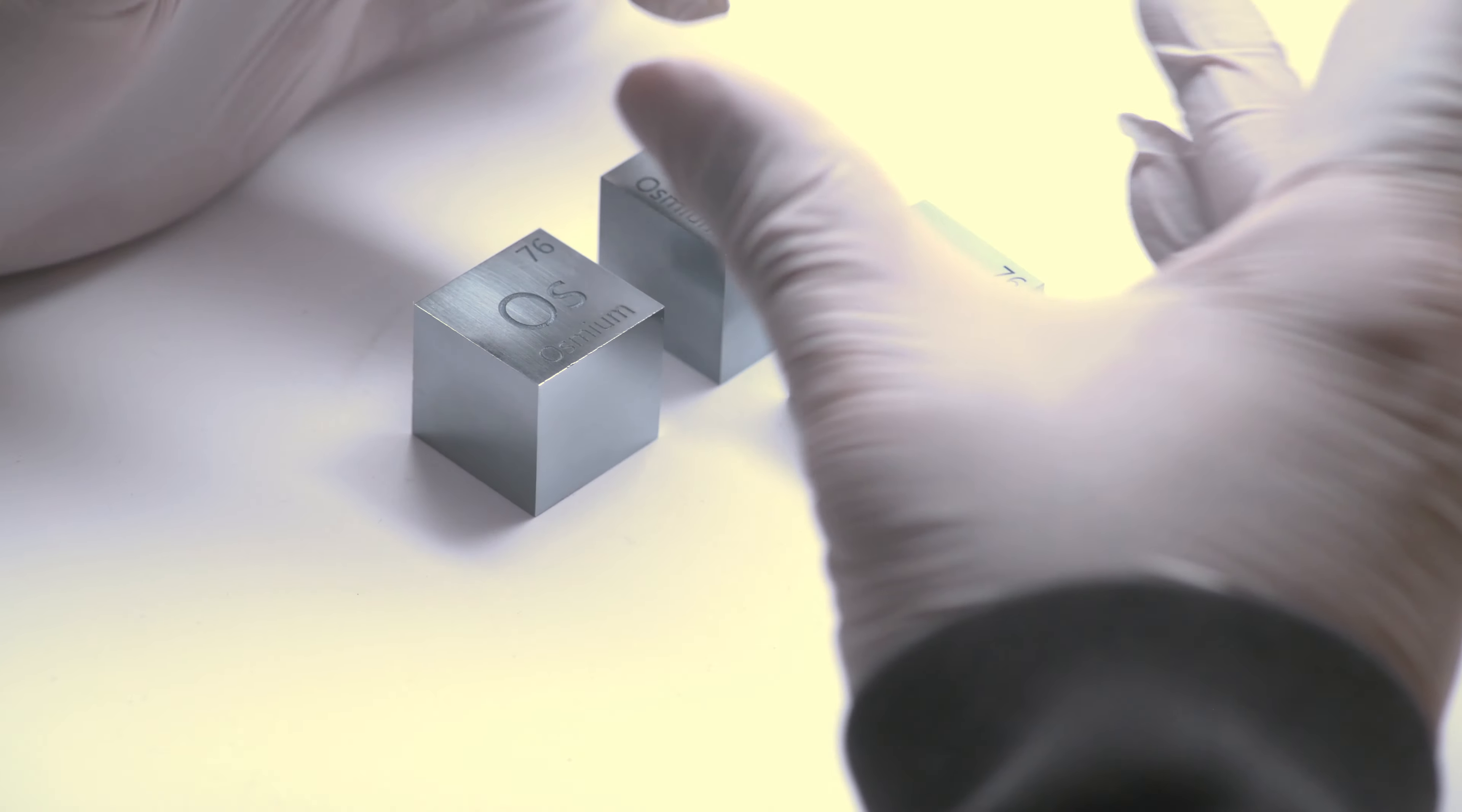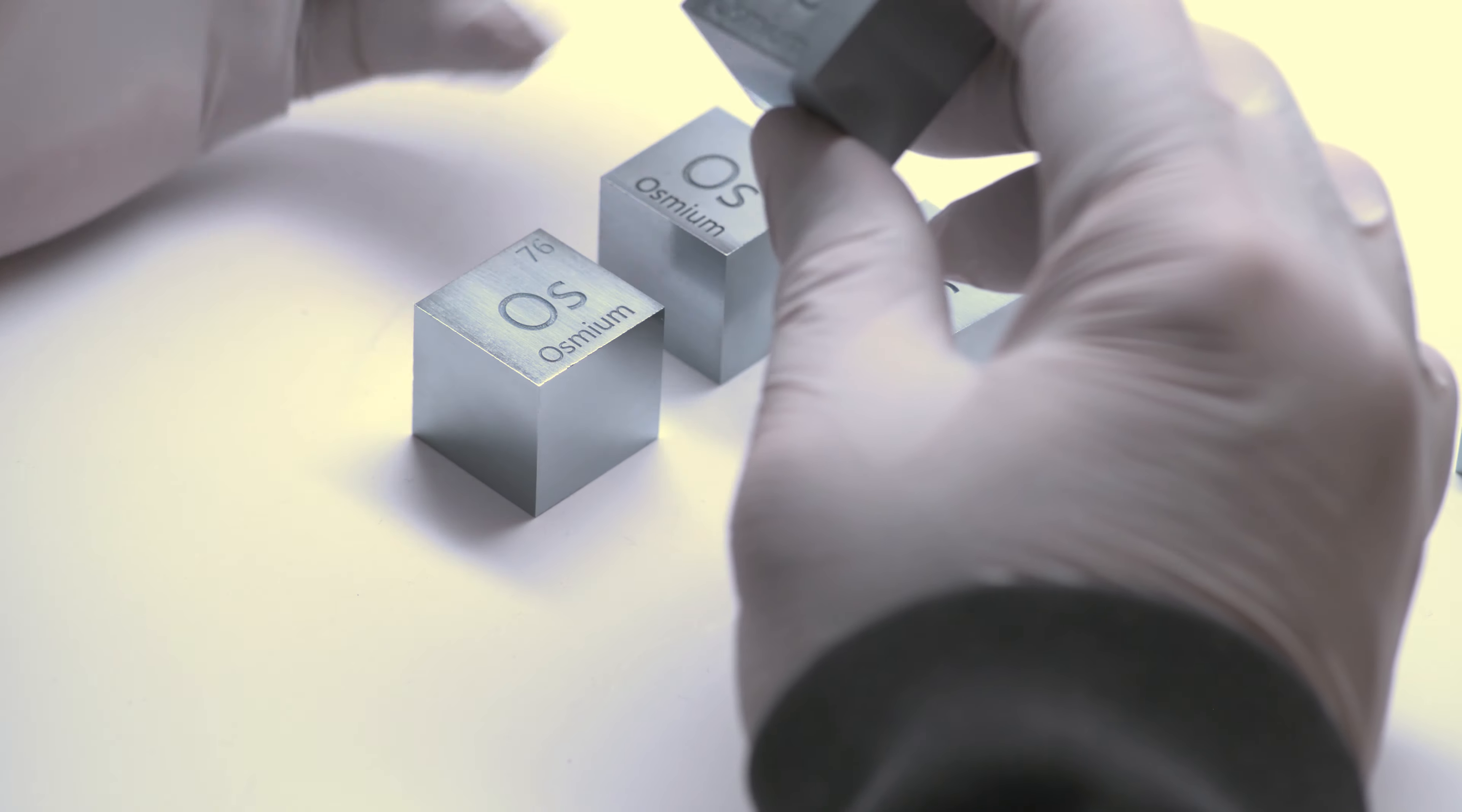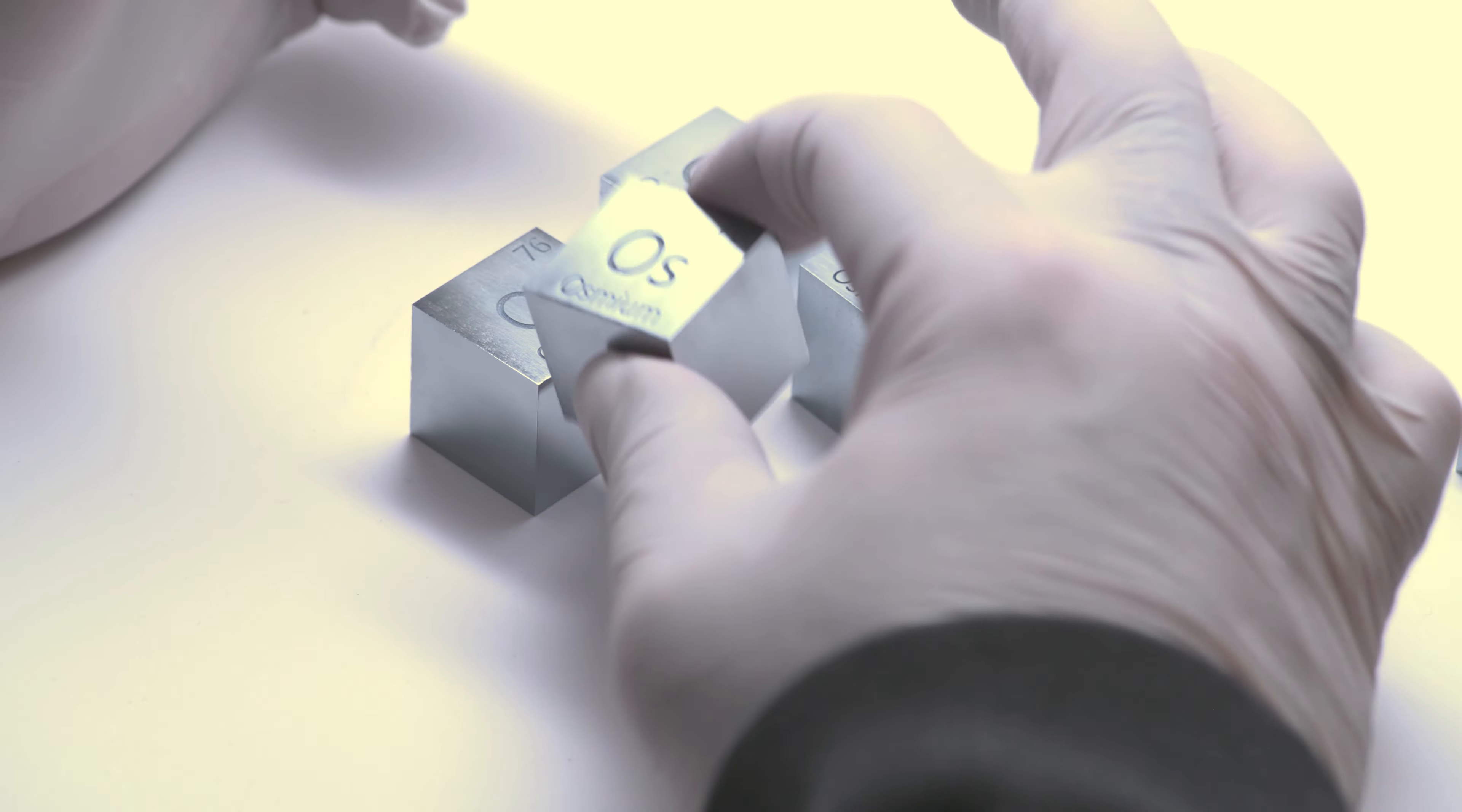They squeeze it at high pressure and heat, and it sort of welds together into what appears to be solid material. But if you look at it under a microscope, you see a lot of voids—air, basically—that robs it of some of its density.